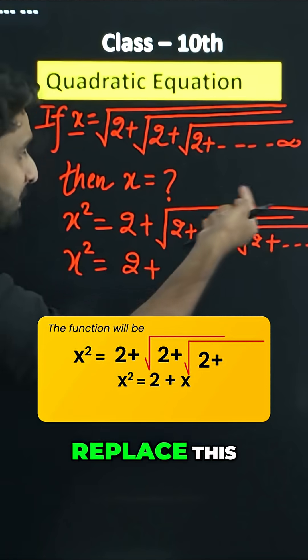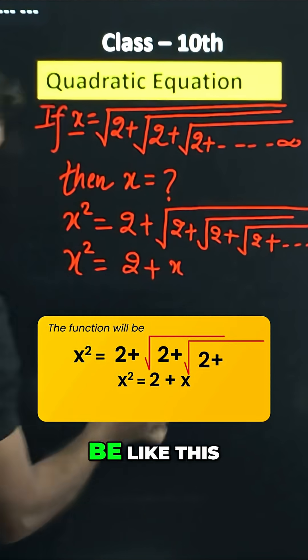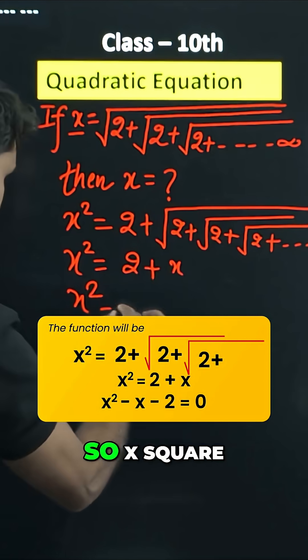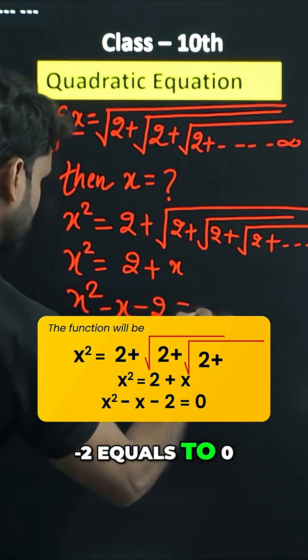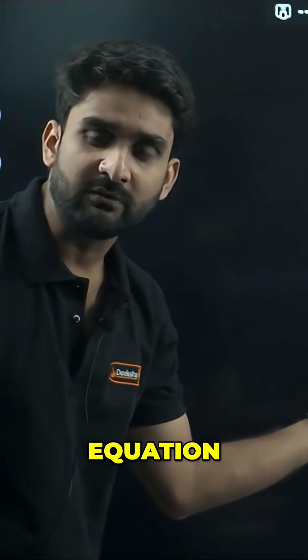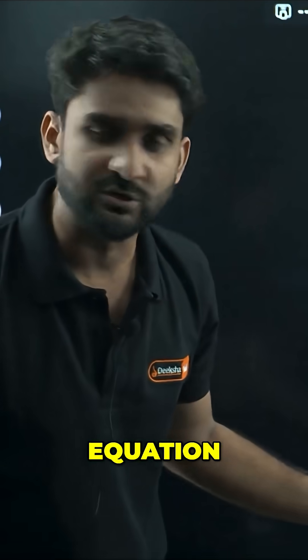So this will be like x square equals 2 plus x. We can shift this term to this side: x square minus x minus 2 equals to 0. Look at the format here. This is the quadratic equation. You know how to solve quadratic equations. You can apply middle term splitting method, which is also called factorization method.